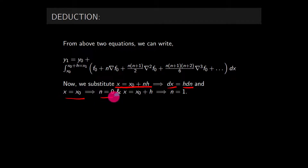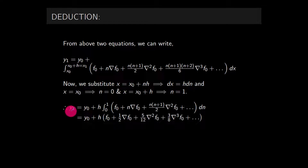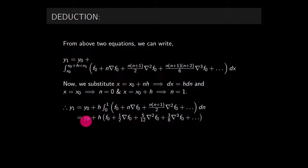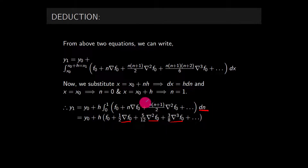After substitution, we get y₁ = y₀ + h ∫(0 to 1) [f₀ + n∇f₀ + n(n+1)/2 ∇²f₀ + ...] dn. Integrating from 0 to 1 with respect to n gives y₁ = y₀ + h[f₀ + ½∇f₀ + 5/12 ∇²f₀ + 3/8 ∇³f₀ + ...]. Note this is a variable n rather than x in the integral.